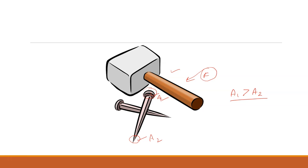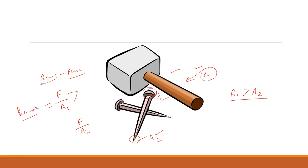After some thinking, Force said it is easier from the pointed side. Then Area told Force: the effort by you in both cases is the same, that is F, but the area in both cases is different — A1 in the first case and A2 in the second. This force divided by area is known as pressure. More the area, lesser will be the pressure with the same force.